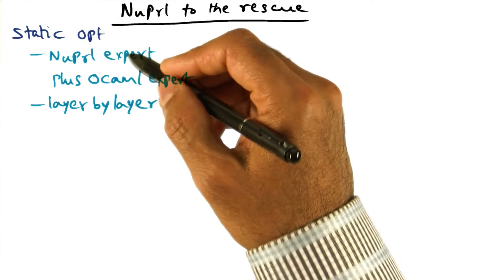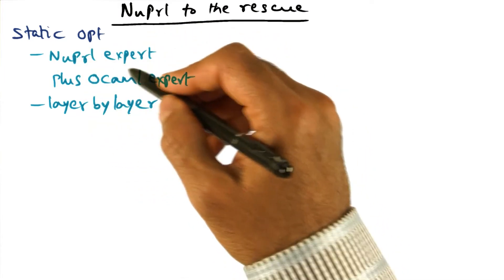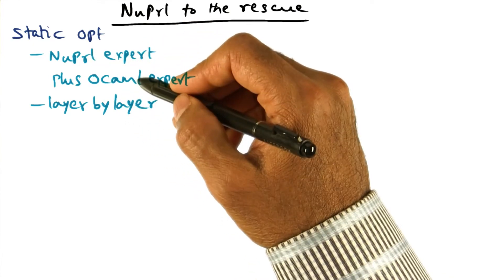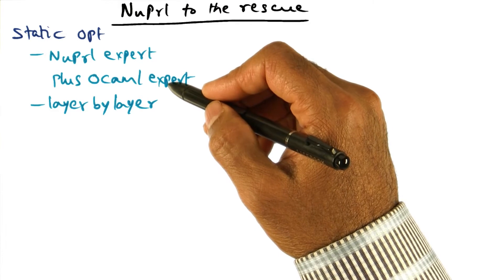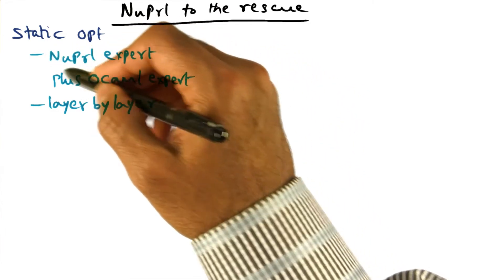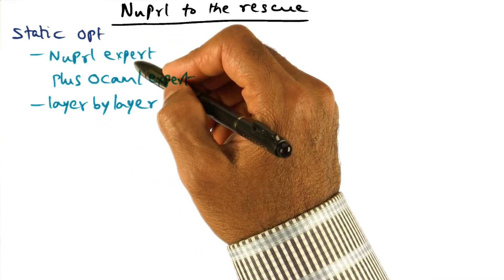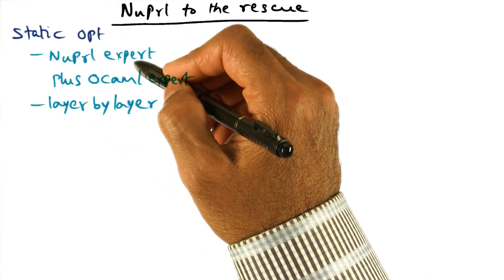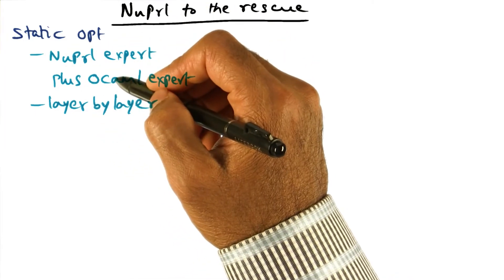This is where both the NewPearl expert and the OCaml expert have to sit together because you want the NewPearl expert to know whether the optimization that they're attempting to do is consistent with respect to the functionality that is desired in the OCaml code. And that's why this is semi-automatic because the optimization itself can be done using the theorem proving framework, but whether that optimization is an appropriate one or not is something that has to be verified with manual intervention.